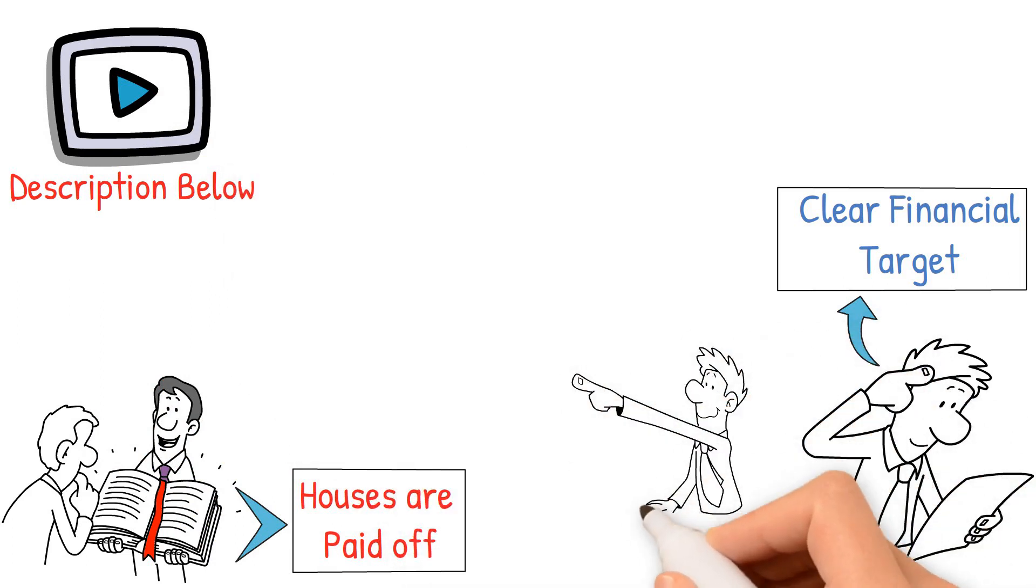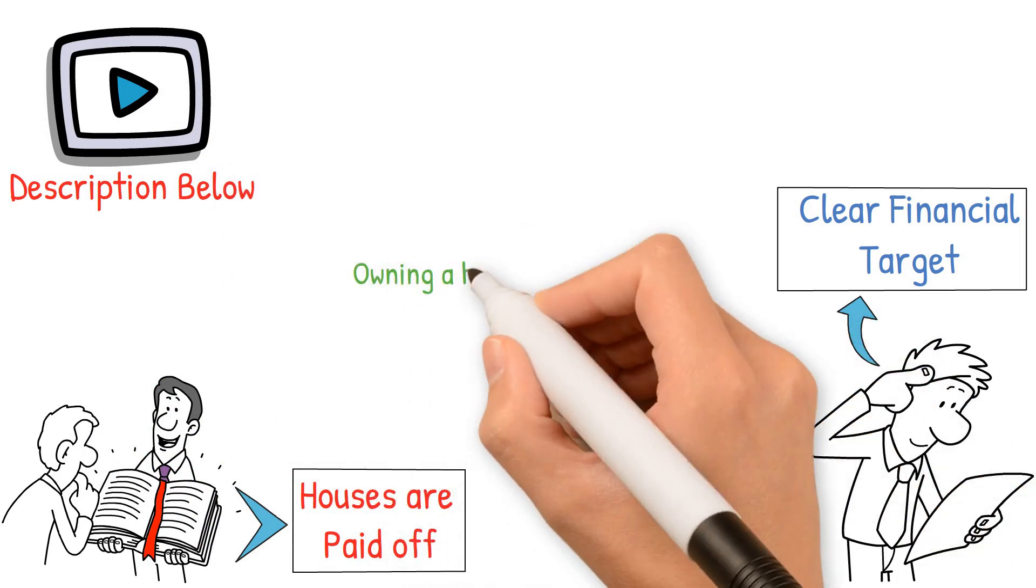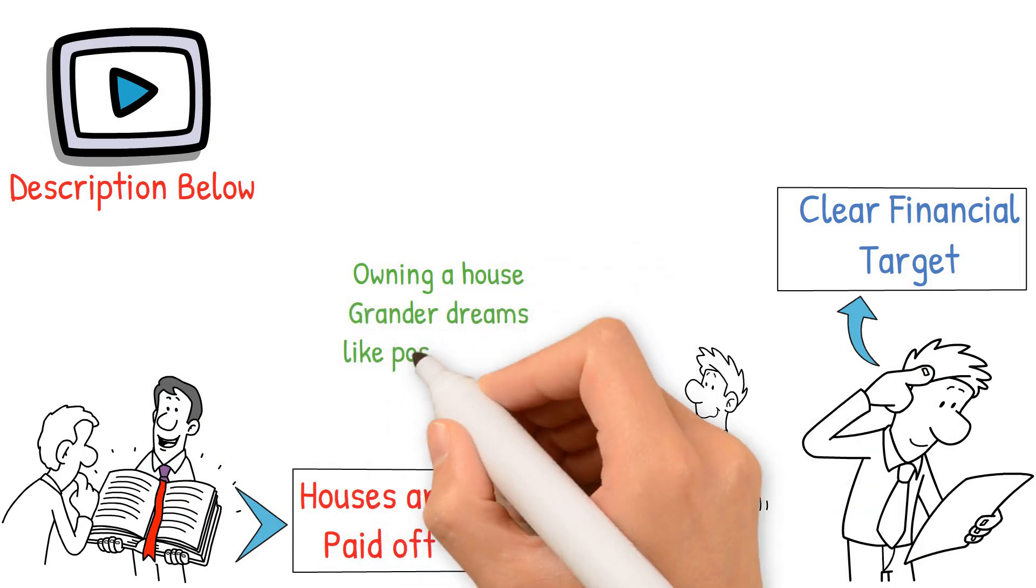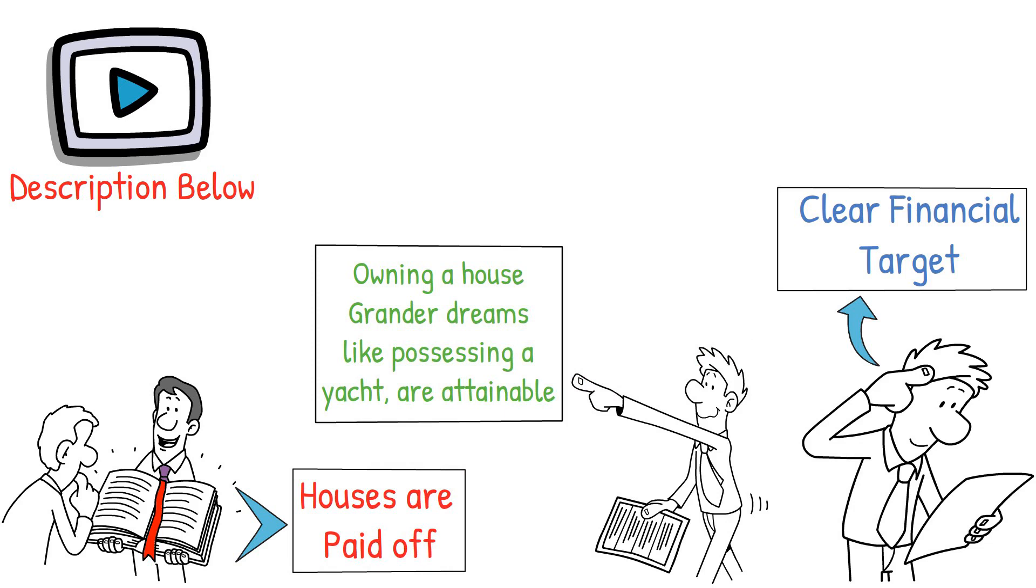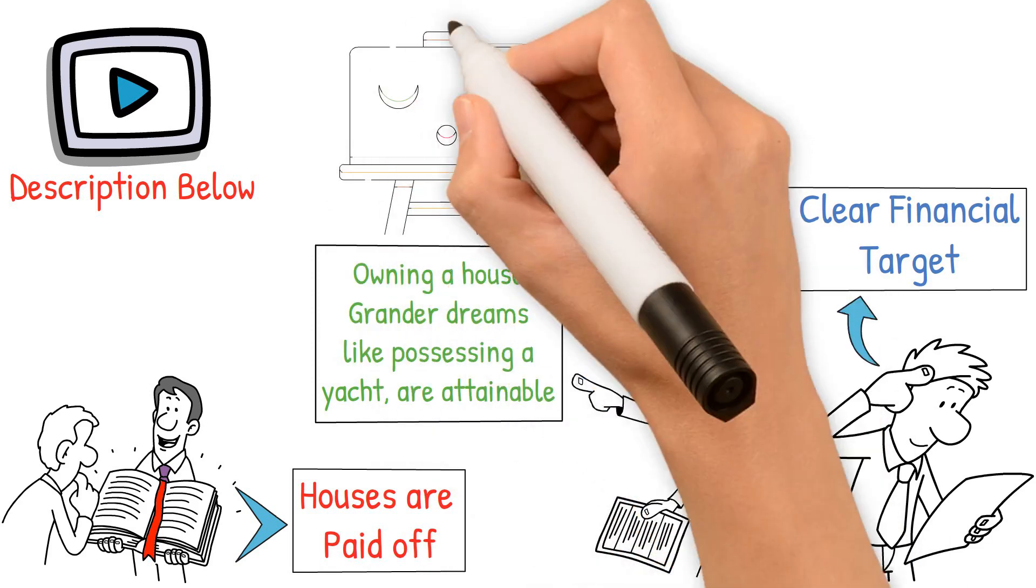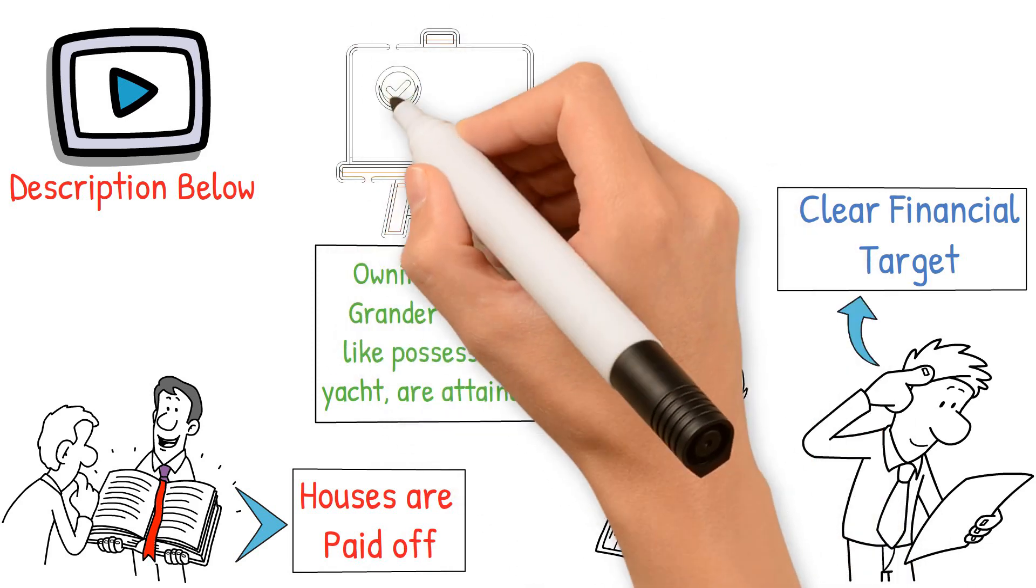Tony also reinforces that while your goals might start with basic aspirations, like owning a house, grander dreams, like possessing a yacht, are attainable. Even if you start late, the right strategies can propel you to success faster than anticipated.